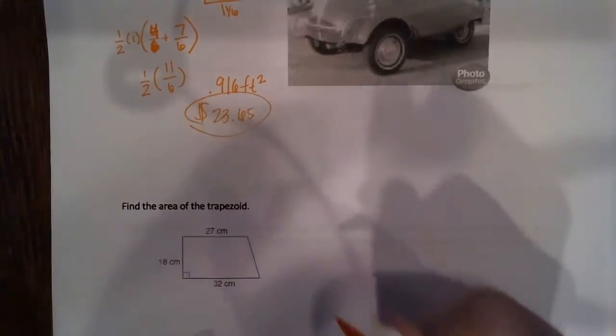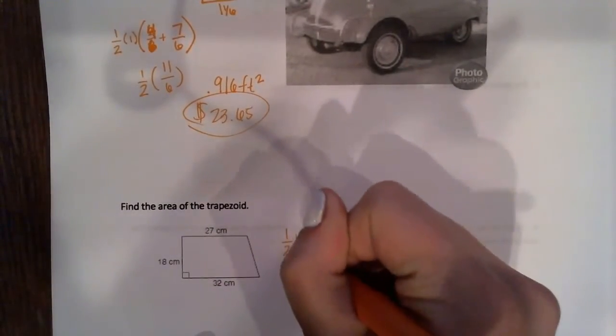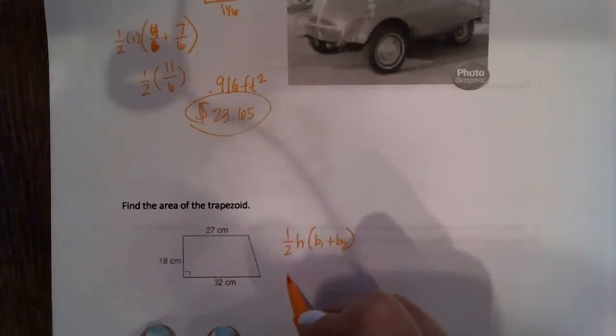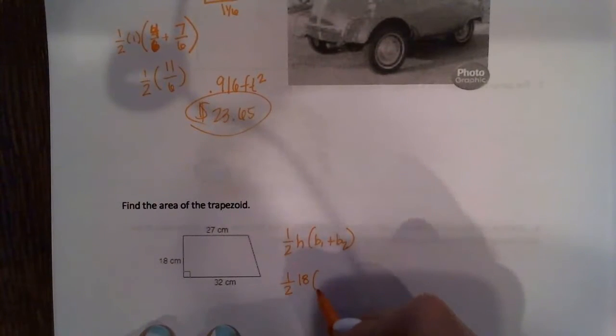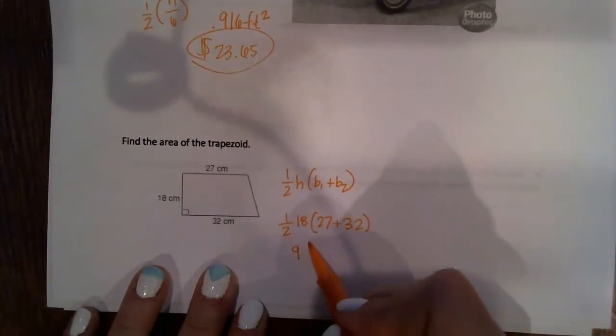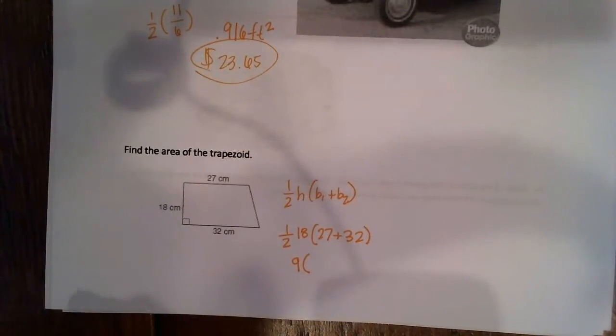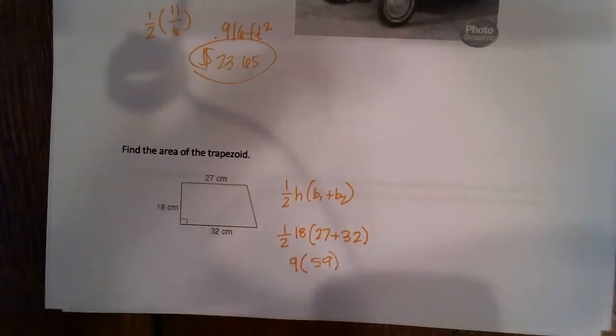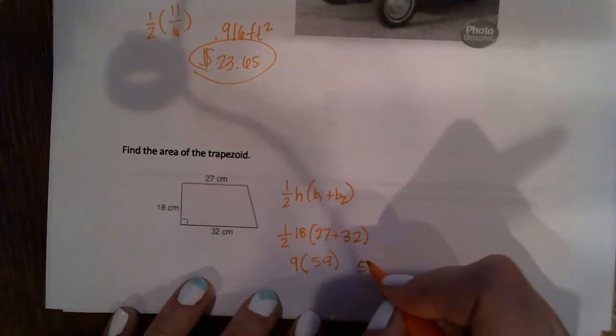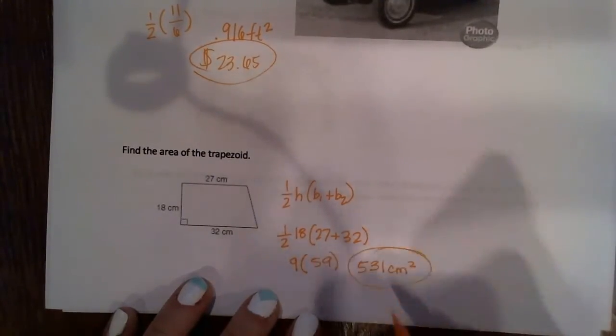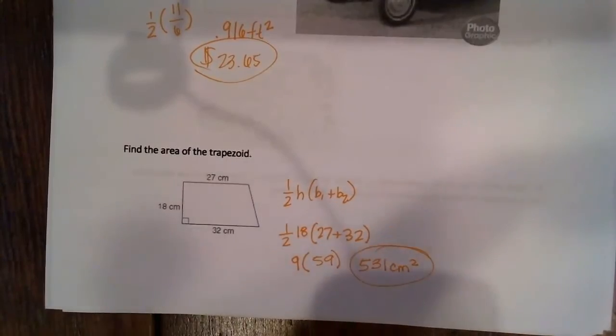Find the area of the trapezoid. We have one-half height, base one plus base two. My height is 18, my base one is 27, plus my base two is 32. Half of 18 is 9. 27 plus 32 is 59. Multiply those together, I get 531 centimeters squared, and that's my answer for this problem.